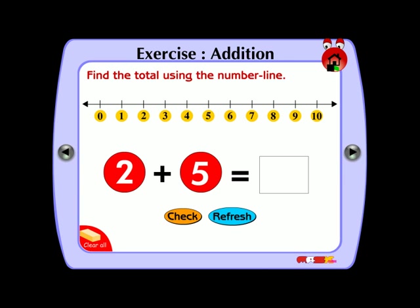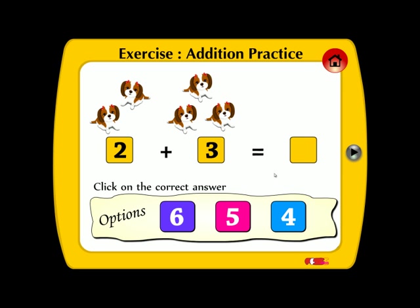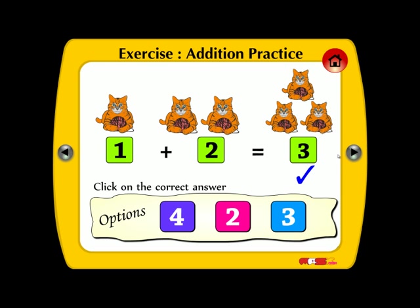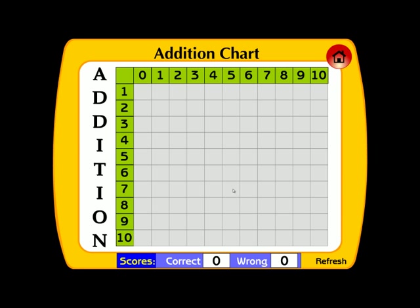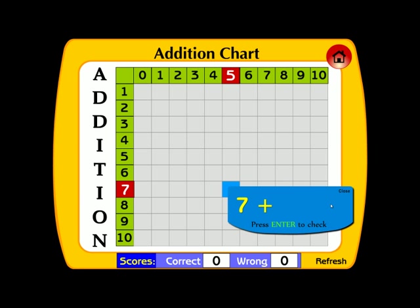2 plus 2, dog, absolute. 1 cat, fantastic. Click on 7 plus 5 equals to. Correct.